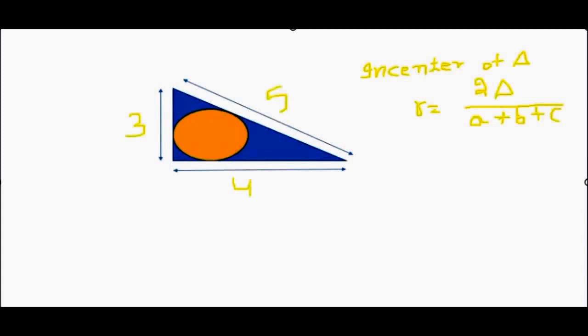So let us assume the sides are 3, 4, and 5. Then area will be given by half base into perpendicular, that is half into 3 into 4, that is equal to 6 cm square.